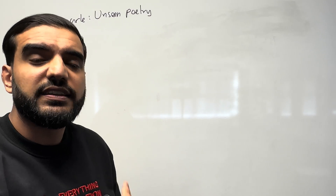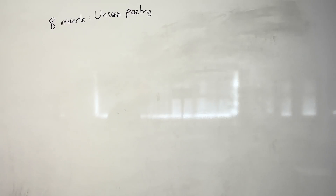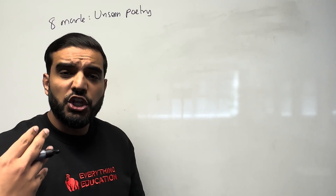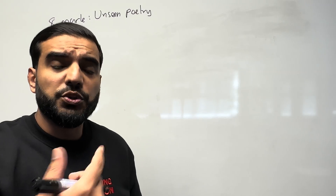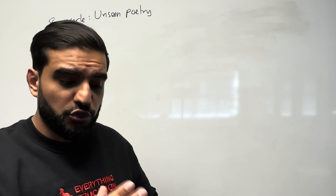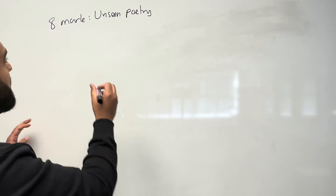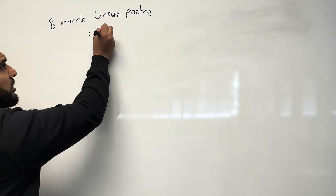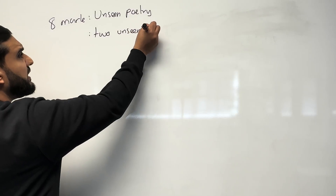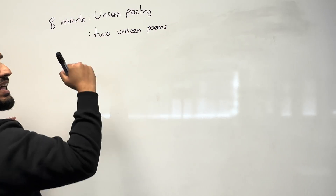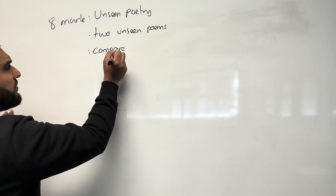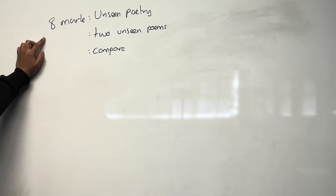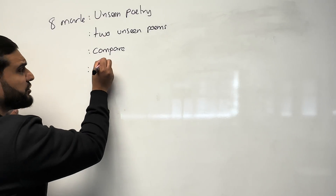Let's go over this exam to put this particular question into context. It's an eight mark unseen poetry question, and before doing this question you've just done a 24 marker unseen poetry question. For this particular question you are looking at two unseen poems — one that you've already just seen and then a brand new one — and you have to compare these two poems.